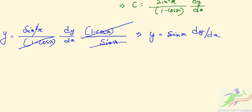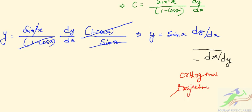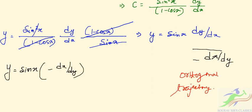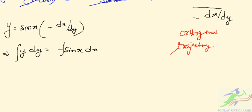For the orthogonal trajectory, we replace dy/dx by -dx/dy. So the equation becomes y = sin x · (-dx/dy), or y dy = -sin x dx. Integrating both sides: y²/2 = cos x + C₁.